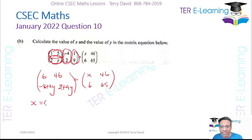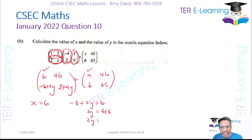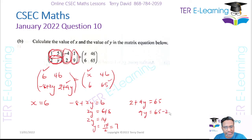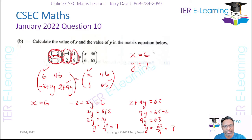Since the two matrices are equal, comparing positions: x = 6. To find y, using -8 + 2y = 6: 2y = 14, so y = 7. Checking with the other entry: 2 + 9y = 65, so 9y = 63, y = 7. Either way, x = 6 and y = 7.